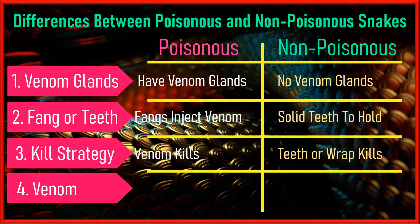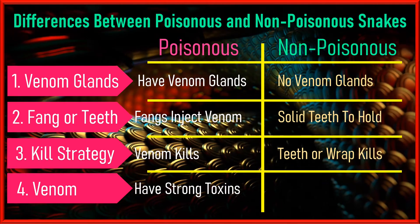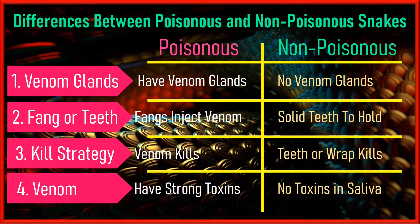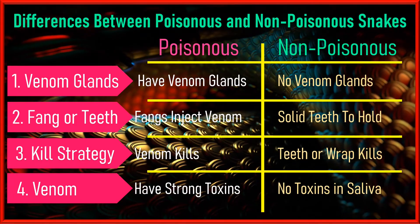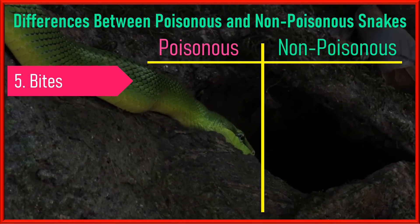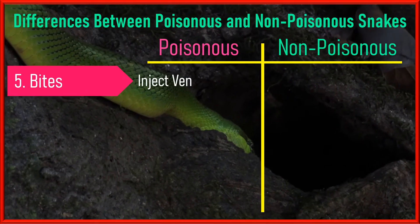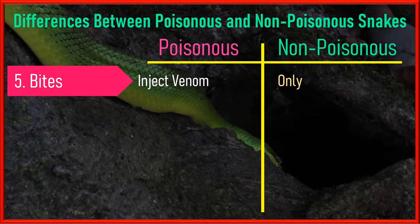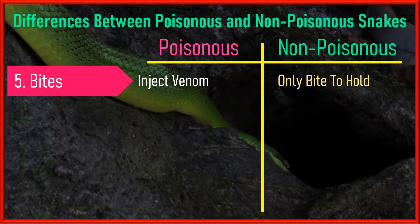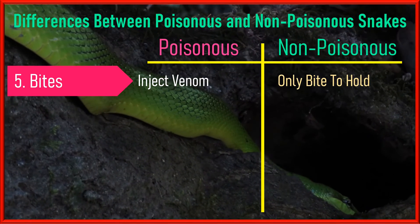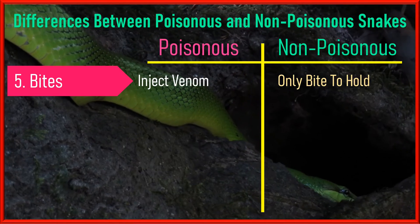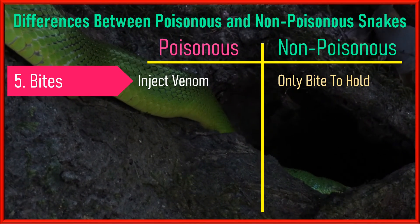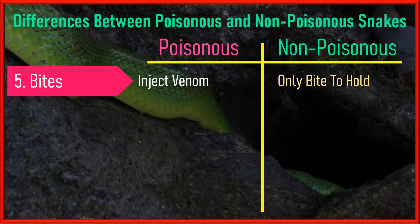Fourth, venom chemistry: venom contains toxic chemicals that clot the blood, while non-venomous snake saliva does not contain such toxins. Fifth, bites: venomous snakes bite to inject venom and then wait for the prey to become immovable, while non-venomous snakes strongly bite and hold the prey, then wrap around it and wait for it to be immovable before engulfing.